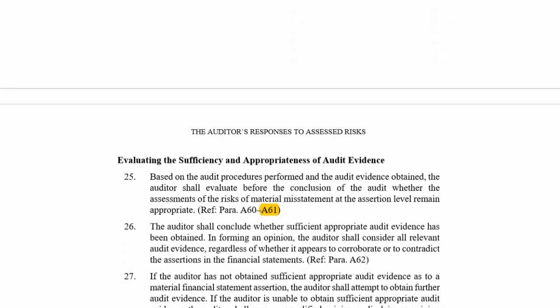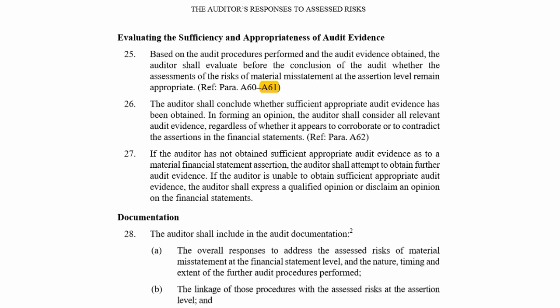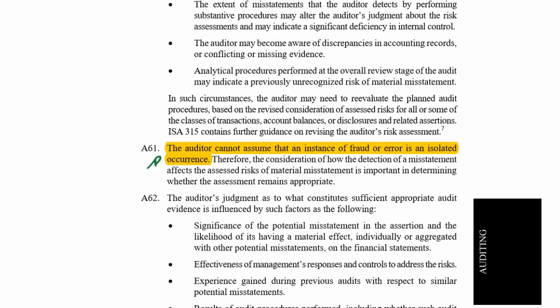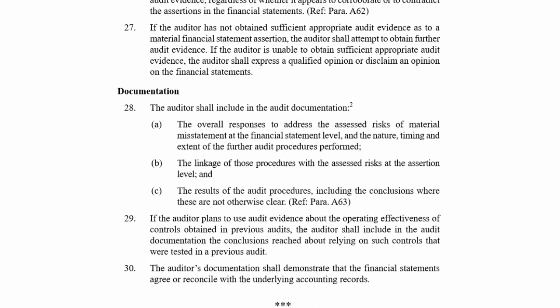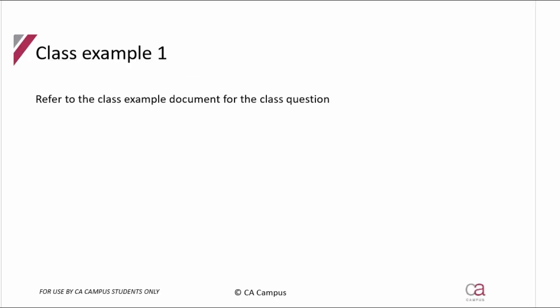The auditor is required to consider whether the presentation and disclosure of the financials is adequate, and to evaluate the sufficiency and appropriateness of audit evidence. A61 states that the auditor cannot assume an instance of fraud or error is an isolated occurrence — if it happens once, you must stop and reconsider the control environment, management's integrity, and how that impacts the audit going forward. Finally, you must document your overall responses and your audit procedures including the conclusions. That is ISA 330.